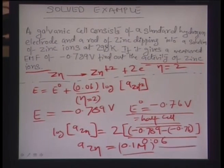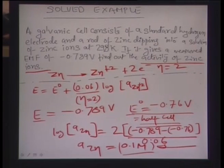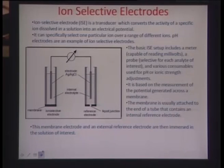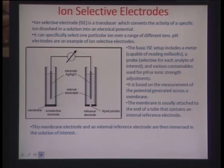The activity of the zinc ions in this example is around 0.1 molar. It may be that the actual concentration of zinc ions is a little more, but due to the shielding effect the activity is a little less. Now let us look at what ion selective electrodes are and what they do.